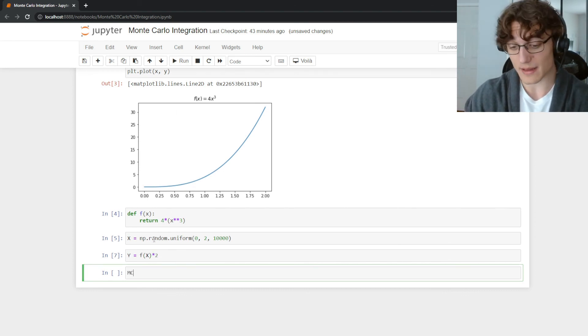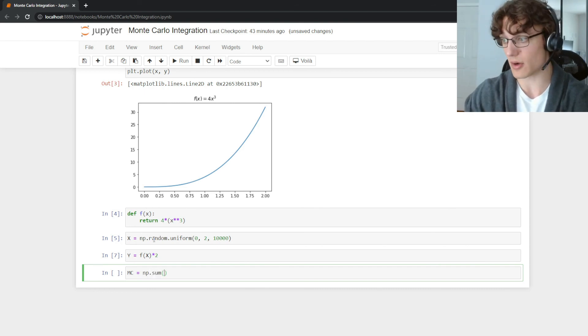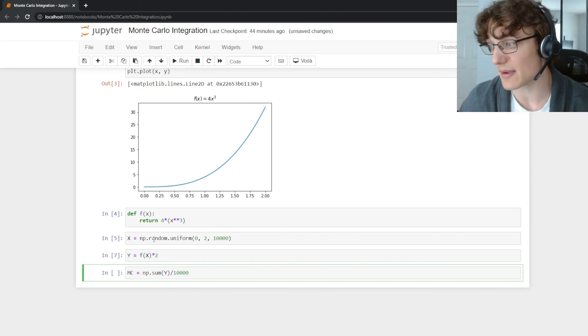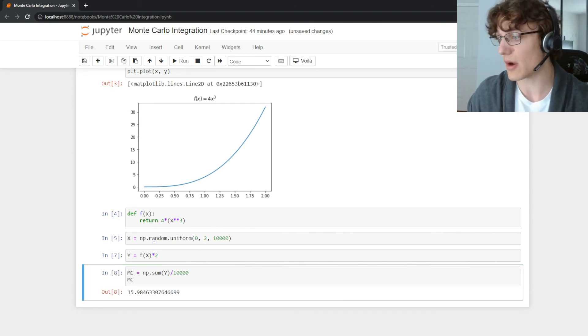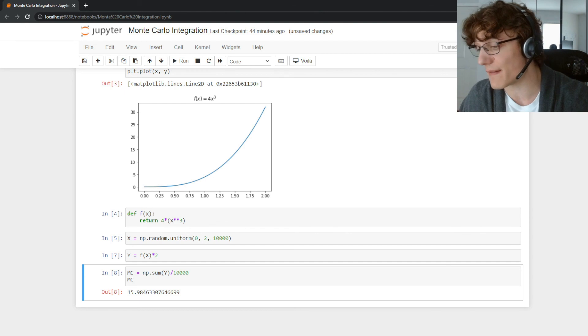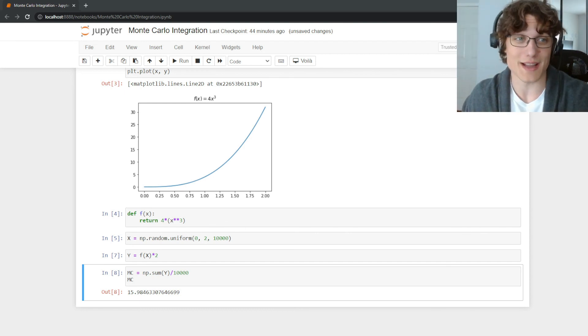Now in traditional Monte Carlo fashion we can simply sum over all of our samples. So sum Y and then divide by the total number of samples in this case 10,000 and we will get our answer of 15.985 which is not a bad approximation for our analytical solution which is 16.